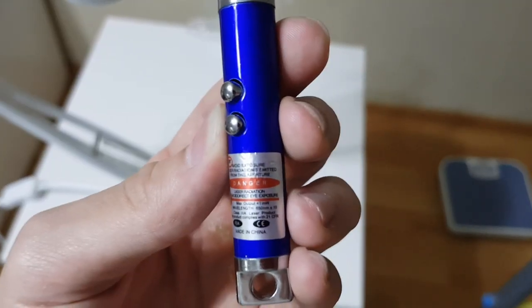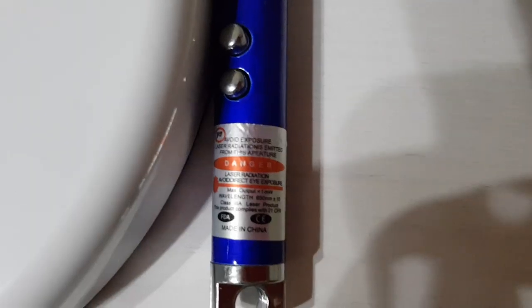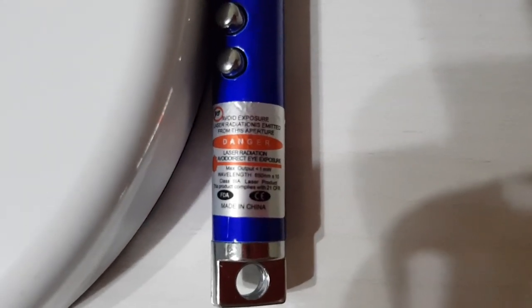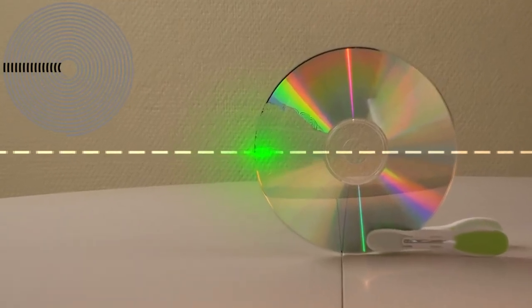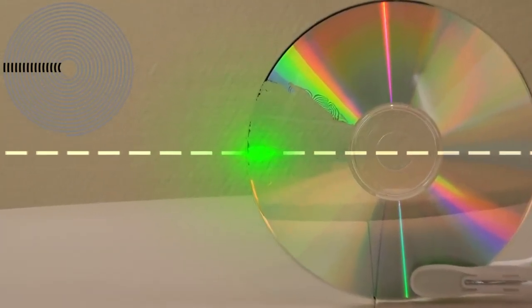Now I need to measure the track spacing on a CD with the red 650 nanometer laser. It is important to have horizontal dots on the wall with the least possible distortion from the curved tracks on the disk. So I'll use the outer part of the CD, where the slits are closer to being linear from the larger diameter of the tracks.